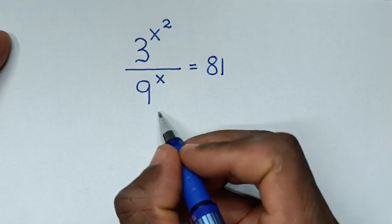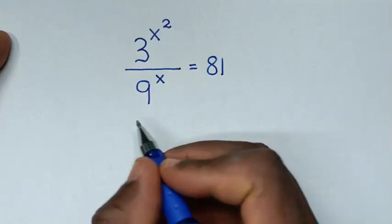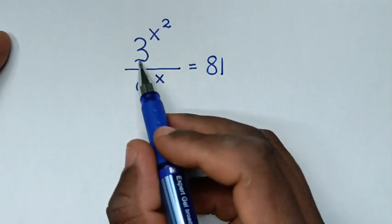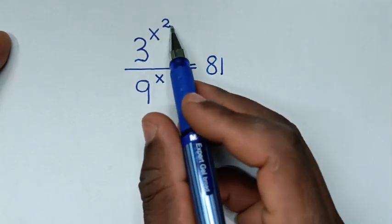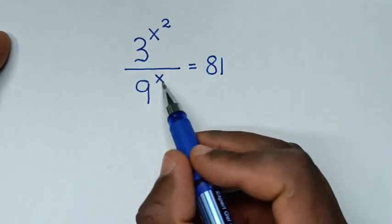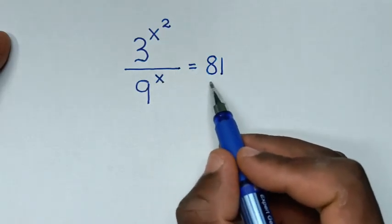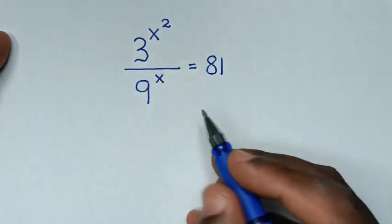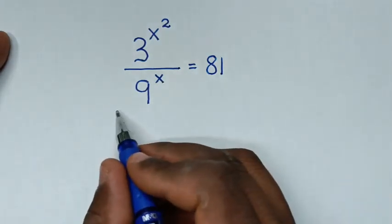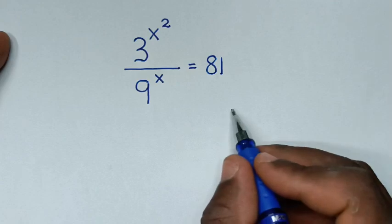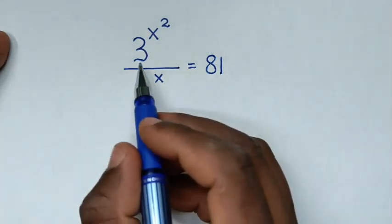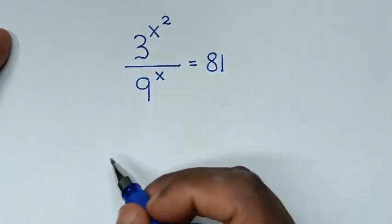Hello, you are welcome to solve this math problem which is 3 power of x square over 9 power of x is equal to 81, to find the value of x from this equation.